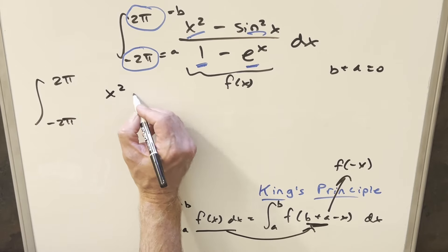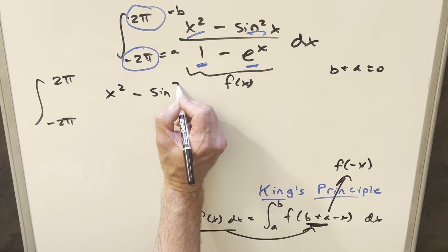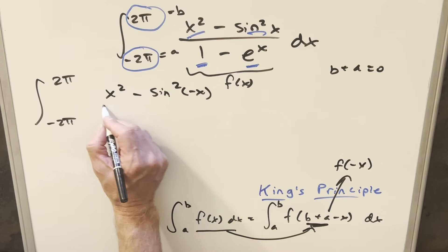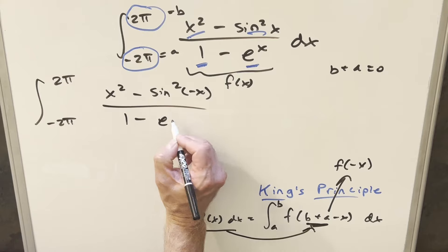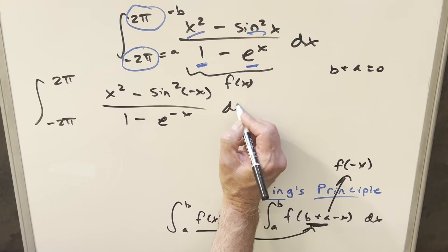But here, -x squared, that's still going to be an x². Then we'll just input it into the sine squared here. So this is going to become sin²(-x). And then in the denominator, we end up with 1 - e^(-x) dx.